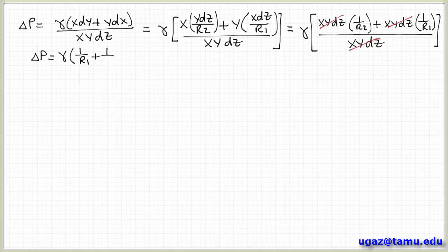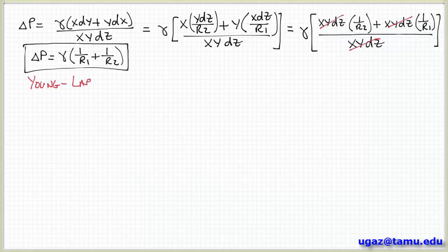And so when I do this, I get a much simpler equation. I get that the pressure drop across the interface is related to the surface tension plus the sum of the inverse of the radii of curvature. So this is the Young-Laplace equation. And it comes basically just from a geometric argument associated with looking at the change in the surface area of this interface.